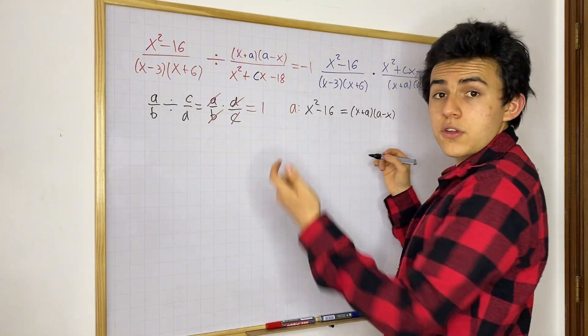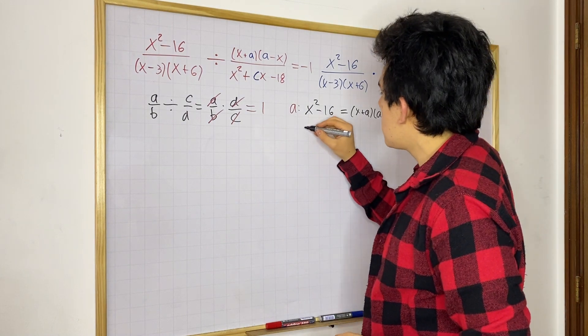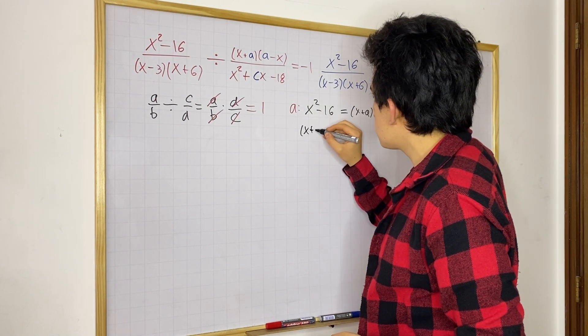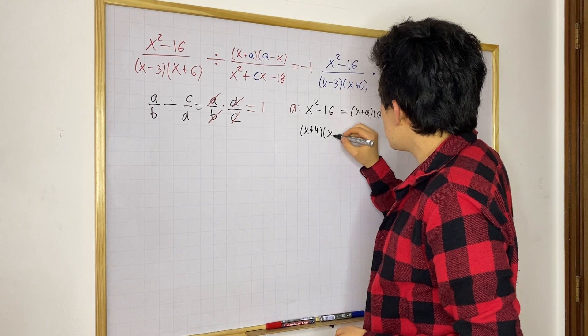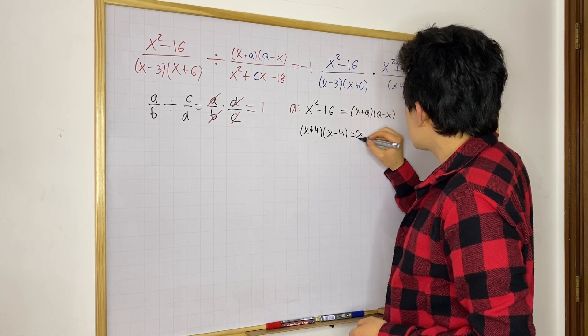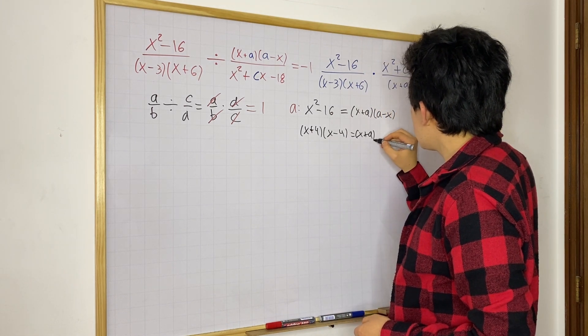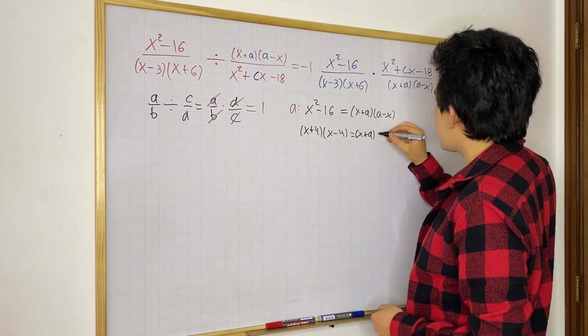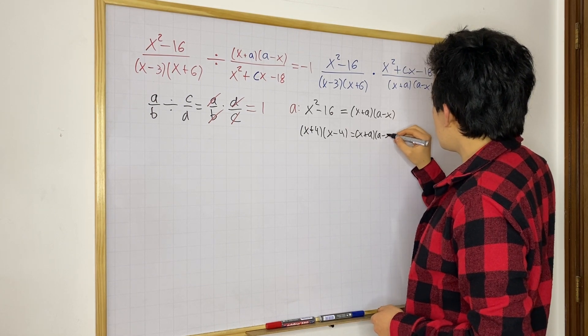So, we know this is a difference of perfect squares. So, we can do X plus 4 times X minus 4. This is equal to X plus A times A minus X.